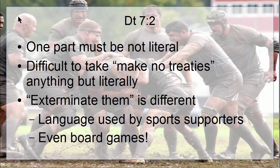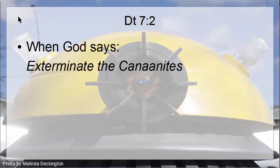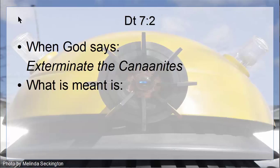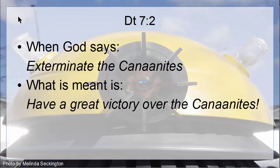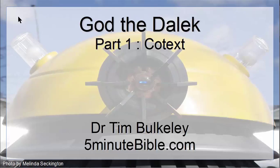So when God in Deuteronomy 7:2 says 'exterminate the Canaanites,' that's not what's meant. What's meant is something like, 'I really hope you have a great victory over the Canaanites.' Of course, we've still got a problem, because God is taking sides — taking sides in massive warfare — but it's a different problem from the problem of the lunatic God who demands genocide.